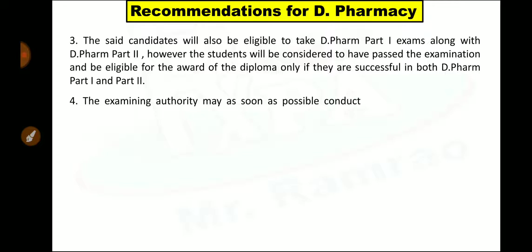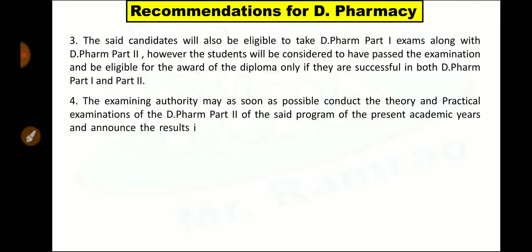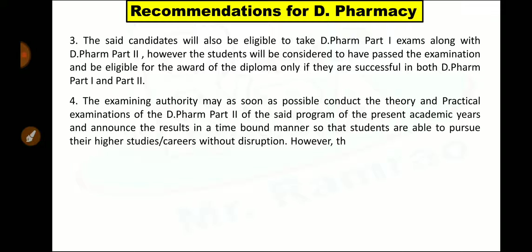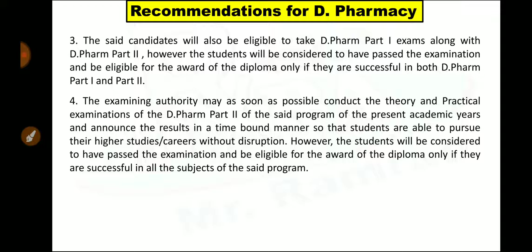For first year students, the examining authority may as soon as possible conduct the theory and practical examinations of D Pharm Part 2 of the present academic year and announce the results in a time-bound manner so that students are able to pursue their higher studies or careers without disruption. However, the students will be considered to have passed the examination and be eligible for the award of diploma only if they are successful in all the subjects of the said program. About second year D Pharmacy students, they have to appear for the theory and practical examinations whenever the timetable is declared by the examining authority.